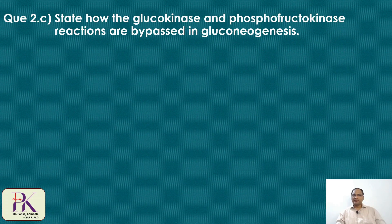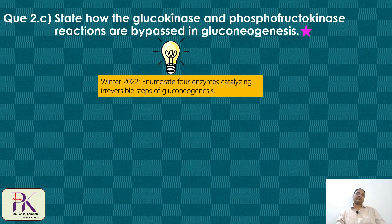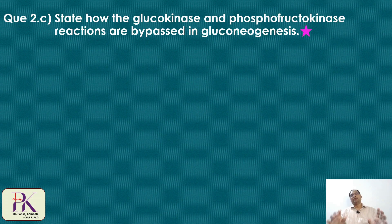The next question: state how the glucokinase and phosphofructokinase reactions are bypassed in gluconeogenesis. This is a star question — a similar topic appeared in the winter 2022 paper, which asked for four enzymes catalyzing irreversible steps of gluconeogenesis. Here, the question specifically asks how these two reactions are bypassed.